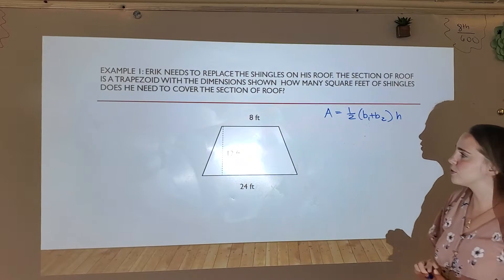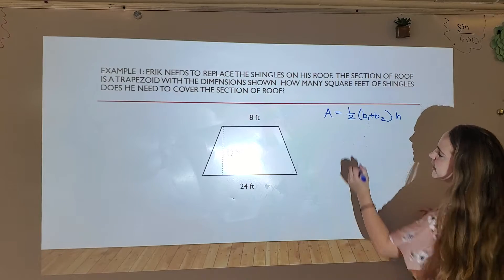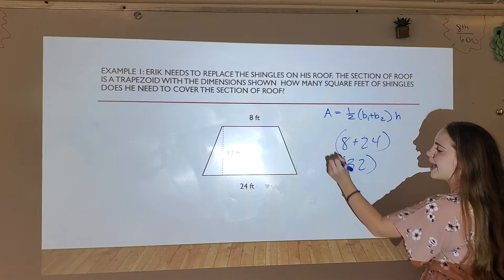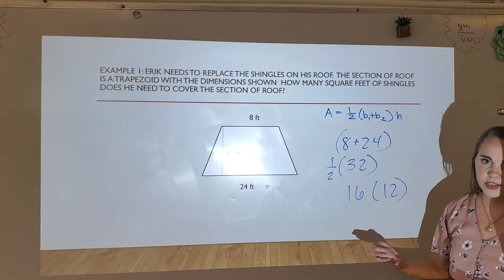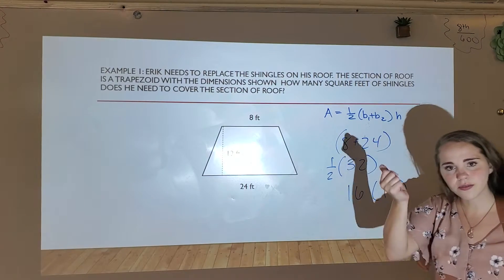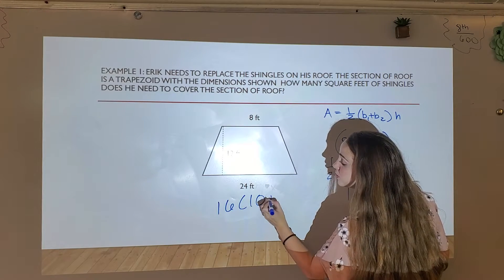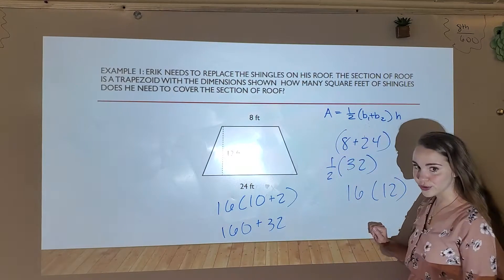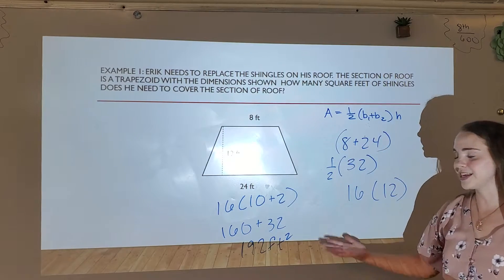Let's start with our very first example. B1 and b2 are 8 and 24, which is 32. Half of that is 16. Then we multiply by 12. I'll use the distributive property — I don't know 16 times 12 off the top of my head, but if I do 10 plus 2, I know 16 times 10 and 16 times 2, so that makes it easier to solve. And of course, feet squared because it's area.